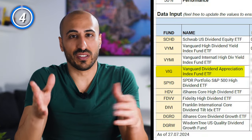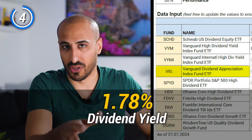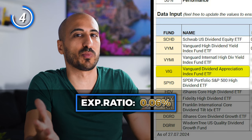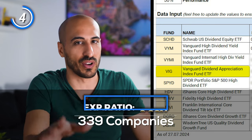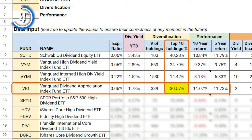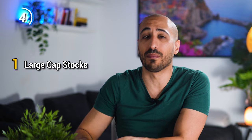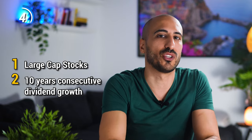Next up we have VIG, the Vanguard Dividend Appreciation ETF. VIG has a dividend yield of 1.78%, one of the lowest on the list, an expense ratio of 0.06%, and 339 holdings, with the first 10 weighting 30.57% of the portfolio. VIG delivered an average annual return of 11.07% in the last 10 years and 11.73% in the last 5. It tracks the S&P US Dividend Growers Index and targets large-cap stocks with a minimum of 10 years of consecutive dividend growth.